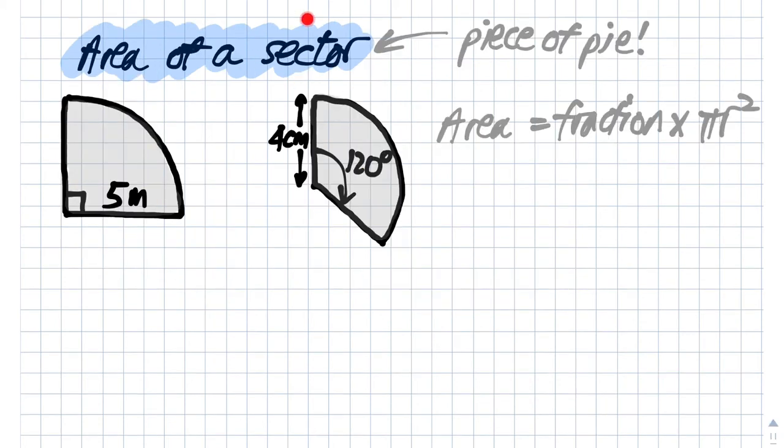With working out the area of sectors, it's just helpful to think what fraction of the full circle are we talking about. So here we're talking about a quarter of the circle, while here we're talking about 120 degrees, which is one third of the full circle.